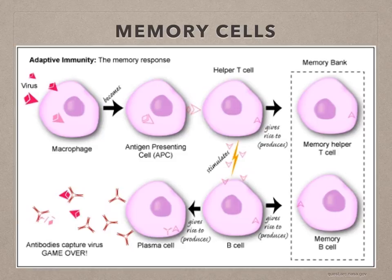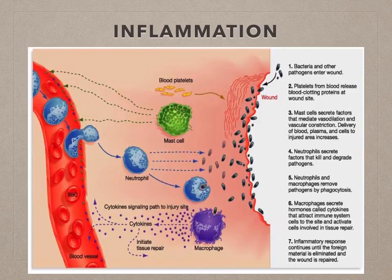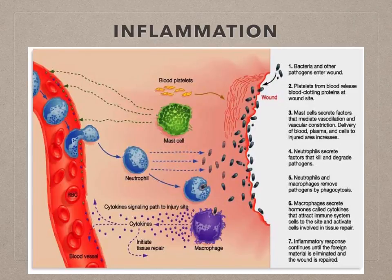Another type of T lymphocyte is the T suppressor cell. It turns off the actions of the various other lymphocytes once the pathogens have been eliminated from the body. An inflammatory response occurs when phagocytes and lymphocytes are concentrated in an area of infection, resulting in inflammation. Antigens initiate the response, increasing blood supply to the area, which becomes red and swollen and may continue to accumulate dead cells forming pus.